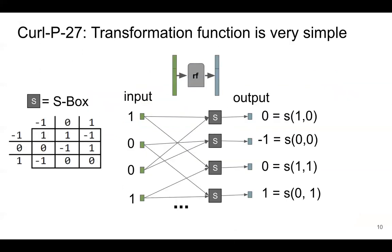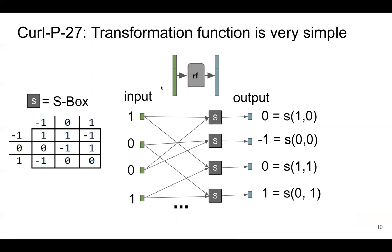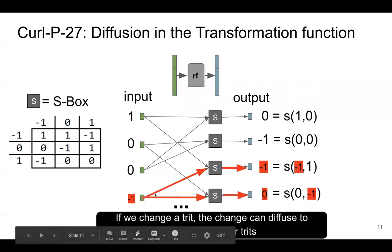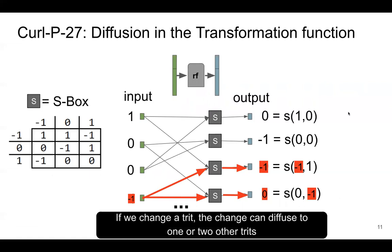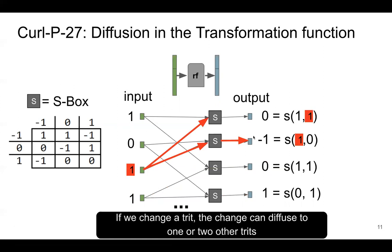This transformation function is very simple — it's just an S-box applied to the input of the state. Each trit in the input is read into an S-box, and the S-box produces one output trit. Because one trit can only influence two S-boxes, if we change a trit, the change can at most diffuse to one or two other trits. It is also possible for it to diffuse to just one other trit.